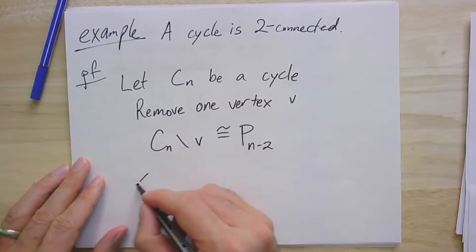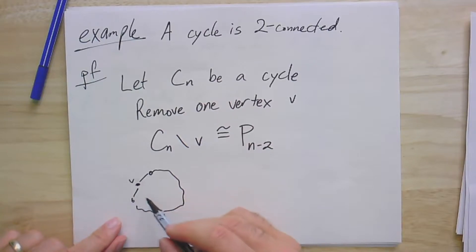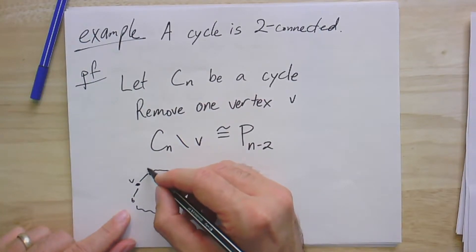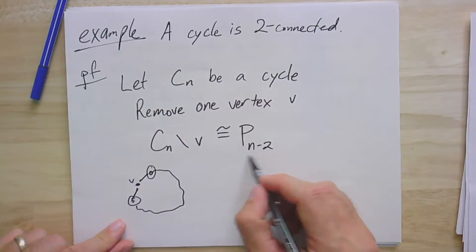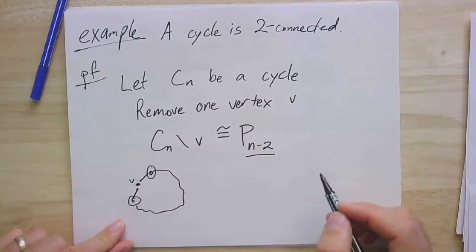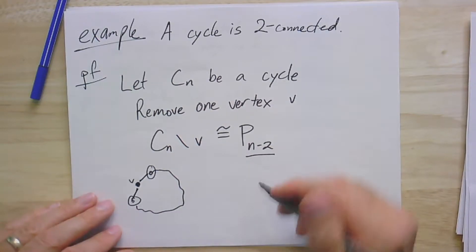Because when we took that cycle, so here's our vertex V, and whatever else is in here, when we remove this one vertex, we get a path from this neighbor of V here all the way to this other neighbor of V, and we remove two edges. And remember that with the paths, we use this convention that the subscript is the number of edges. So we had n edges, and we lost two. That is, we lost the two edges incident to V.